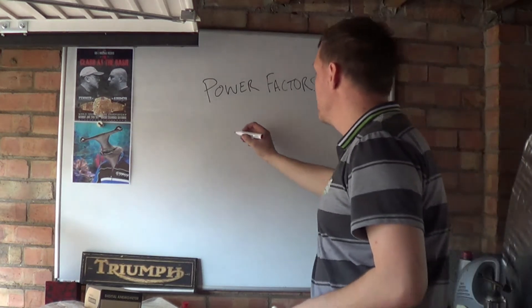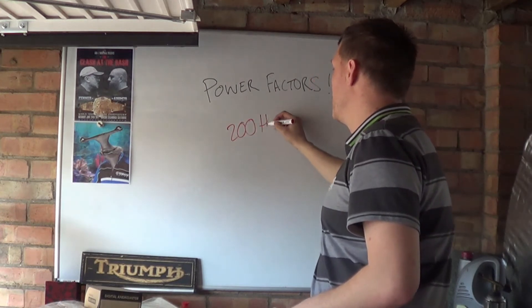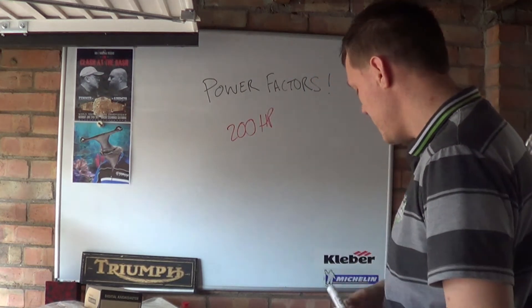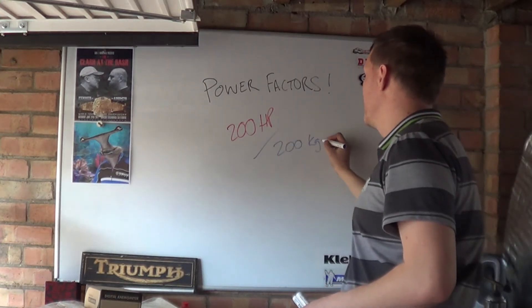What's a power factor? So you take, I don't know, that's just massive numbers. 200 horsepower. You then divide that by the weight. So if we say it's a 200 kilo bike.